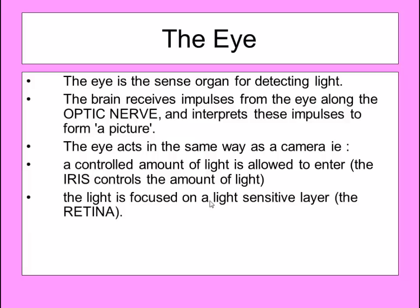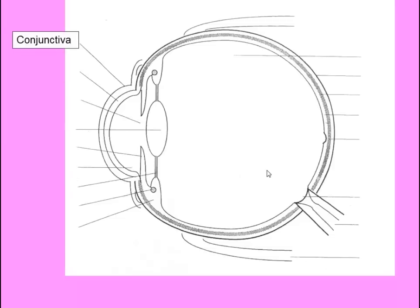Let's think about the exact parts of the eye and label this diagram. At the front of the eye is the conjunctiva. It is nowhere near as thick as represented in the diagram compared to the next layer, the cornea. However, it is there, and when you get conjunctivitis it is this conjunctiva which gets infected — it gives us our gummy eye.